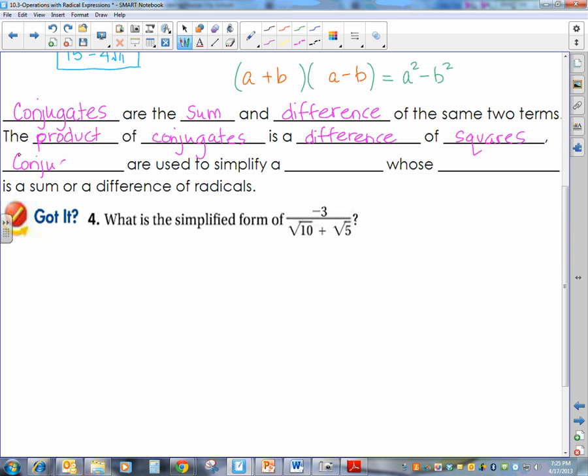And lastly, conjugates, the reason this is so important is because they are used to simplify a quotient, whose denominator is a sum or difference of radicals. So we have a problem here. Negative three over the square root of ten plus the square root of five. I have a sum or difference, of course it's a sum, in the denominator that has radicals. So, I have to multiply by the conjugate, which says you write exactly what you see, but you change the sign to the opposite.